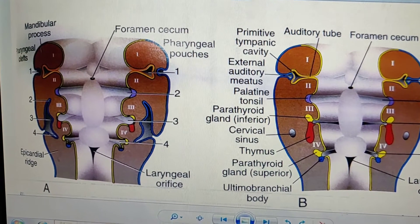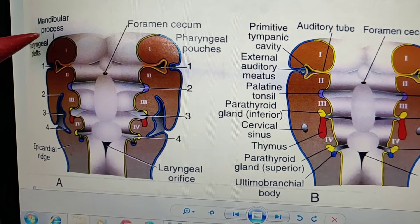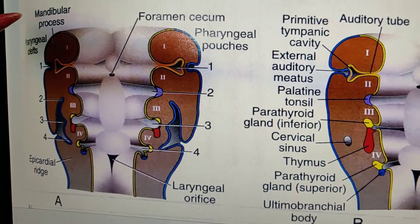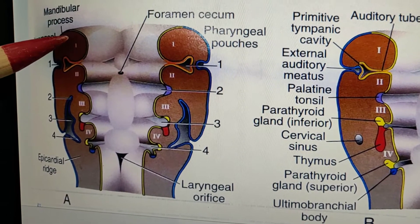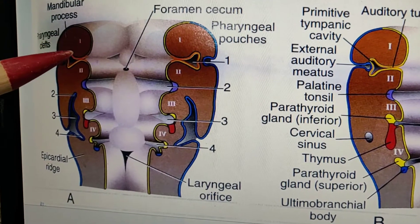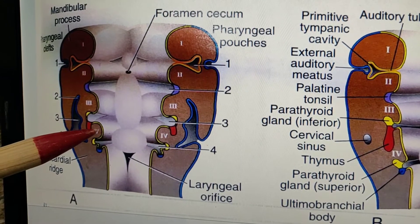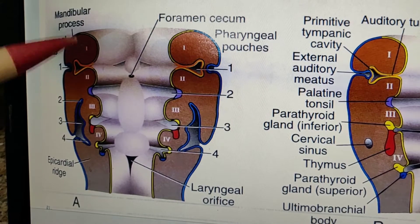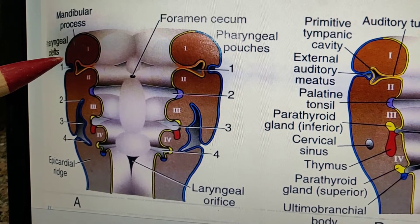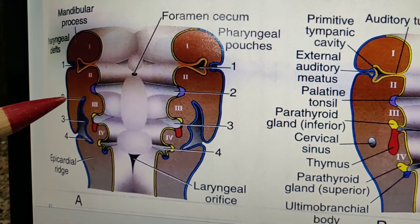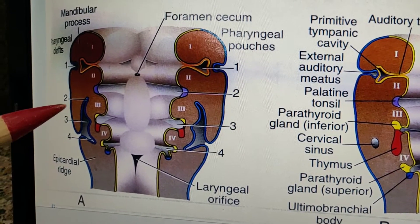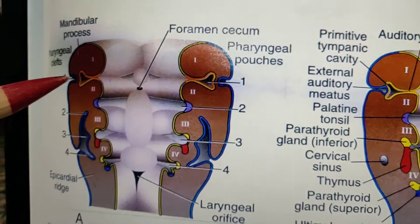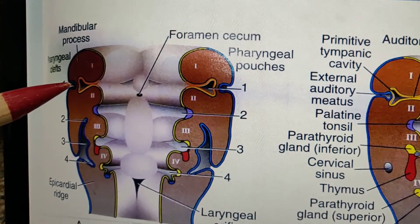This is the coronal section diagram. The brown colors represent the arches — first, second, third, and fourth arch. These are the mesenchymal teeth. From the outside, the blue color represents the surface ectoderm. Between the first and second arch, this depression is the first ectodermal cleft.